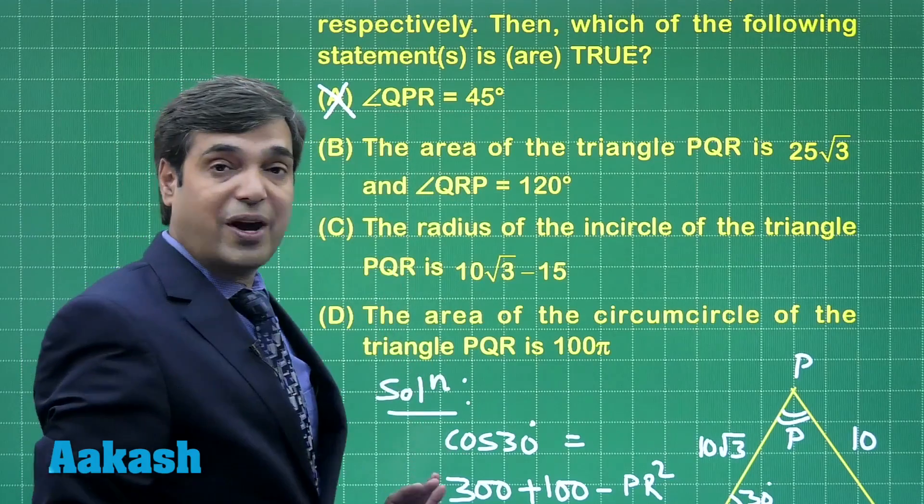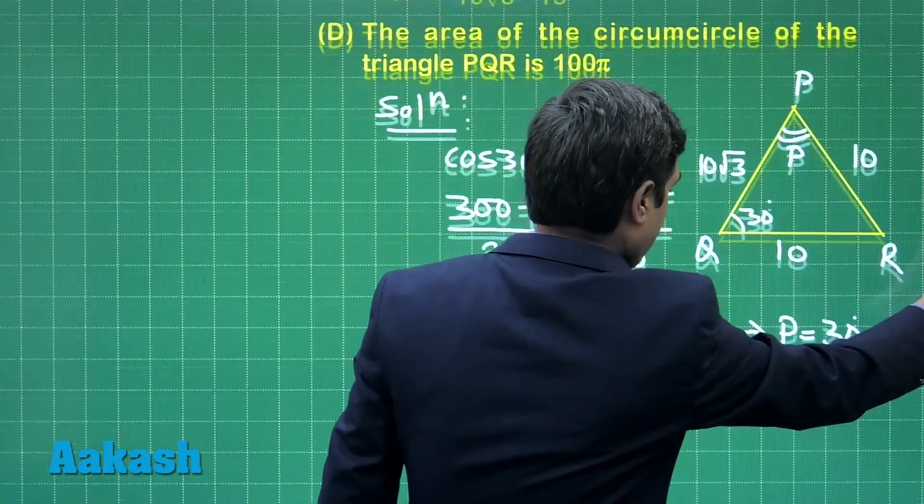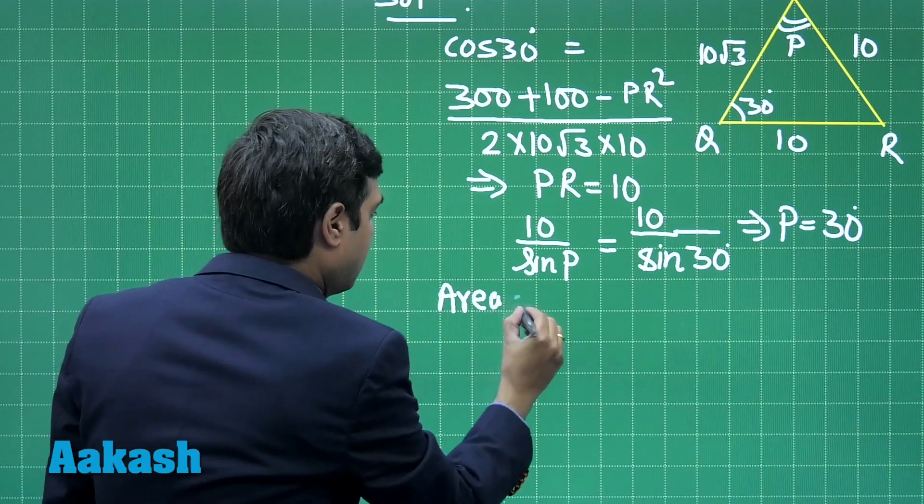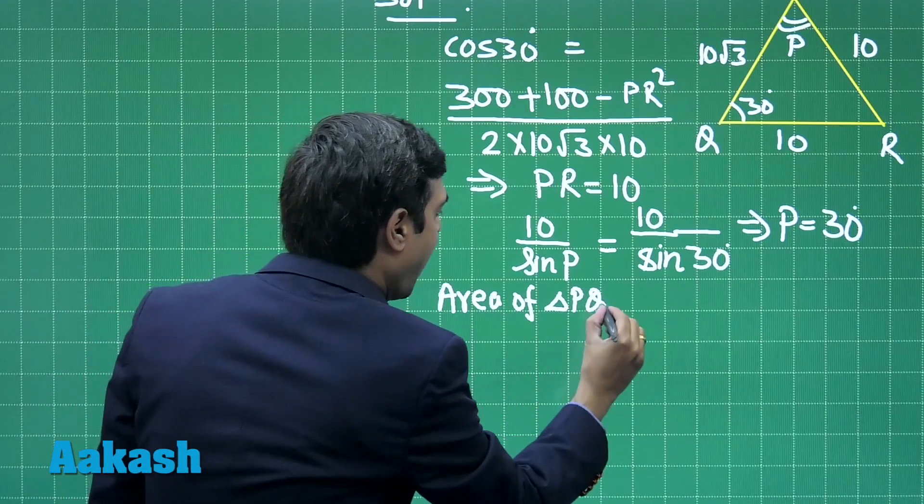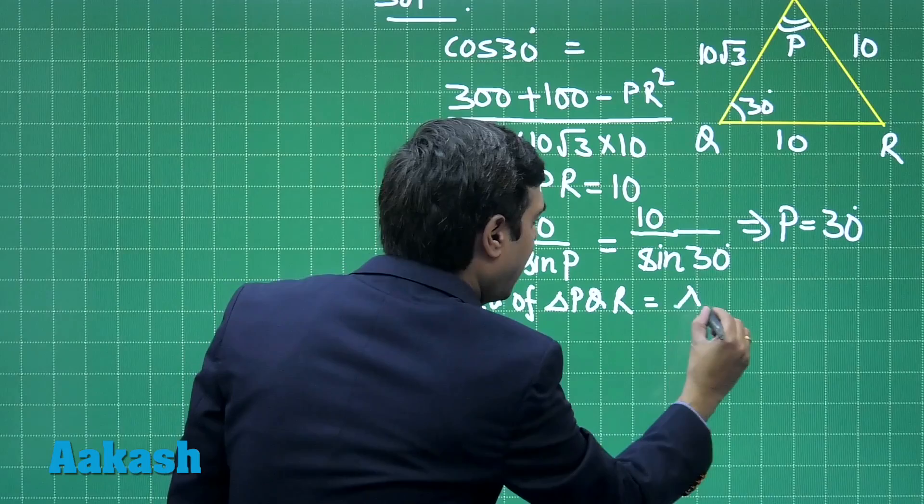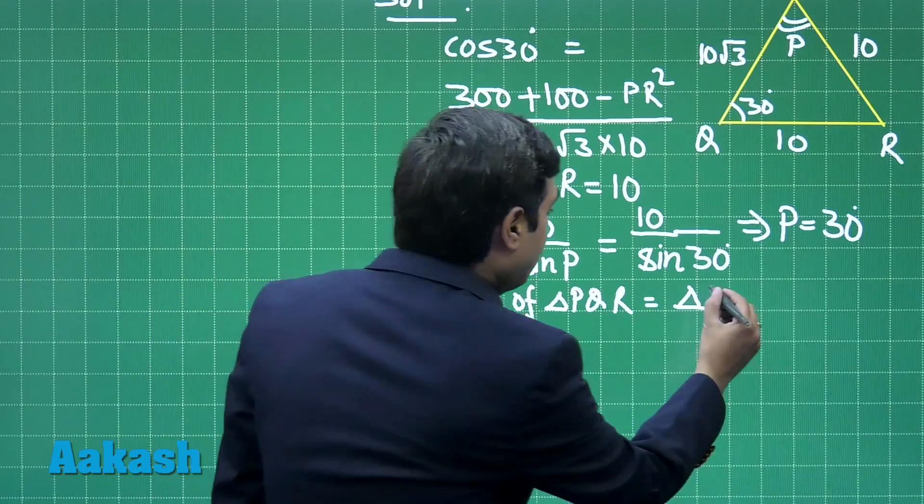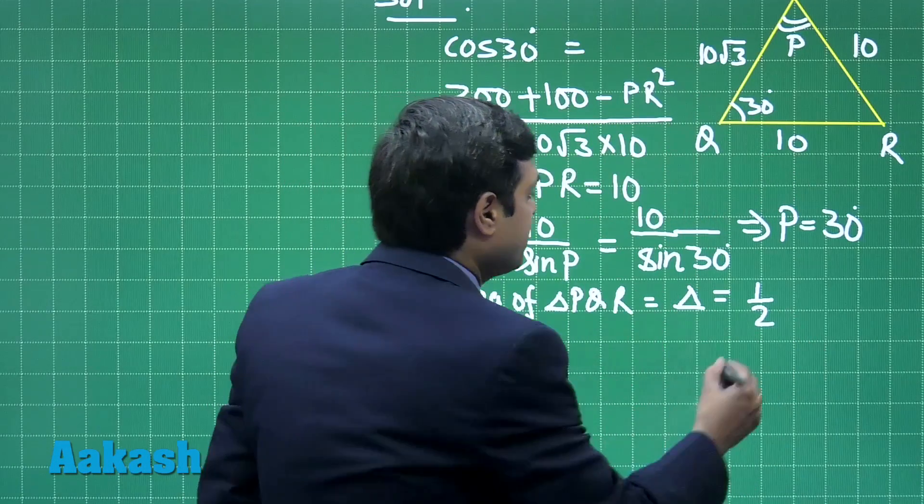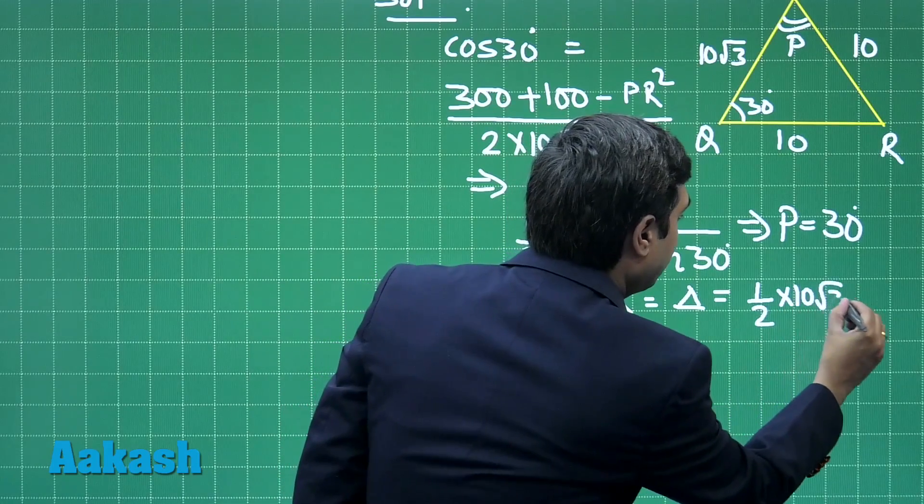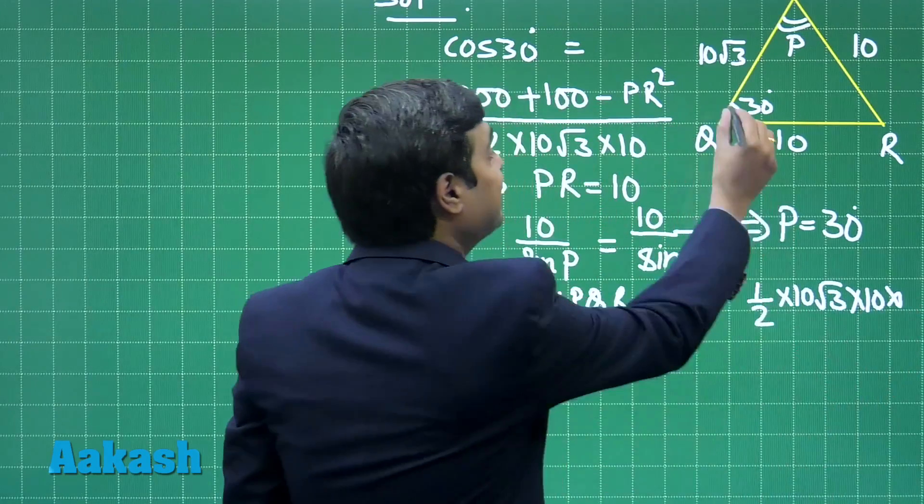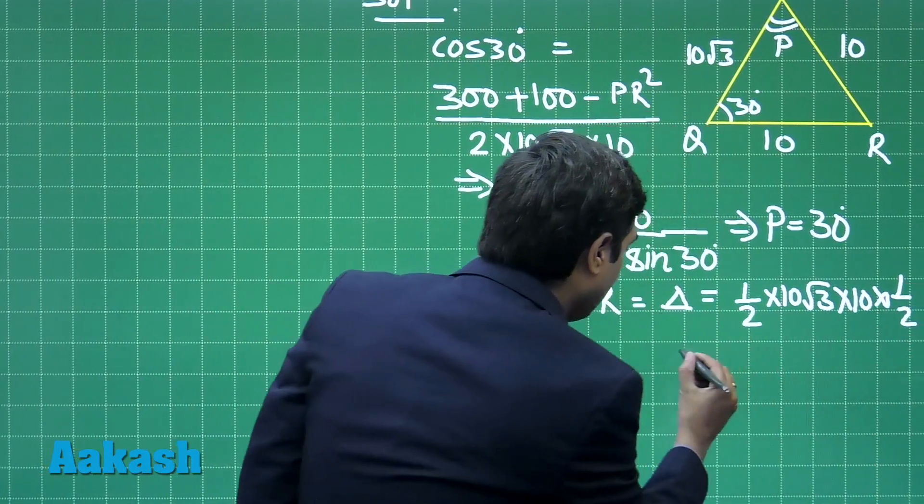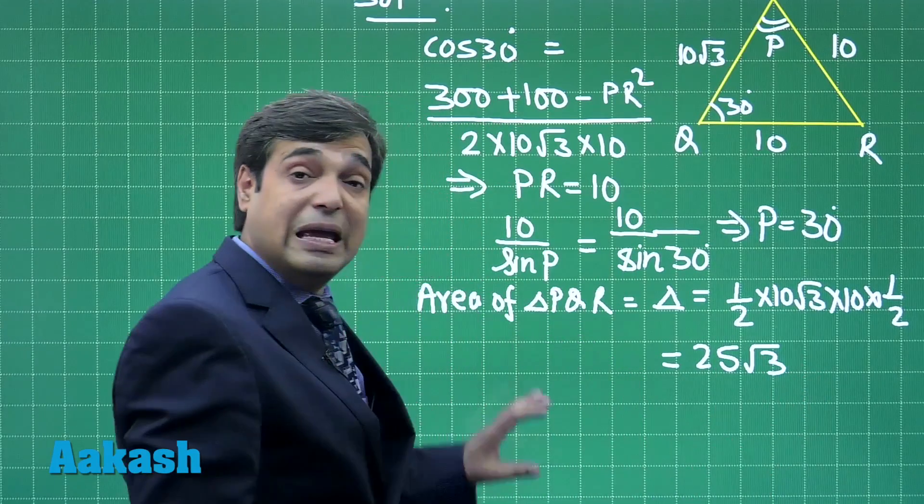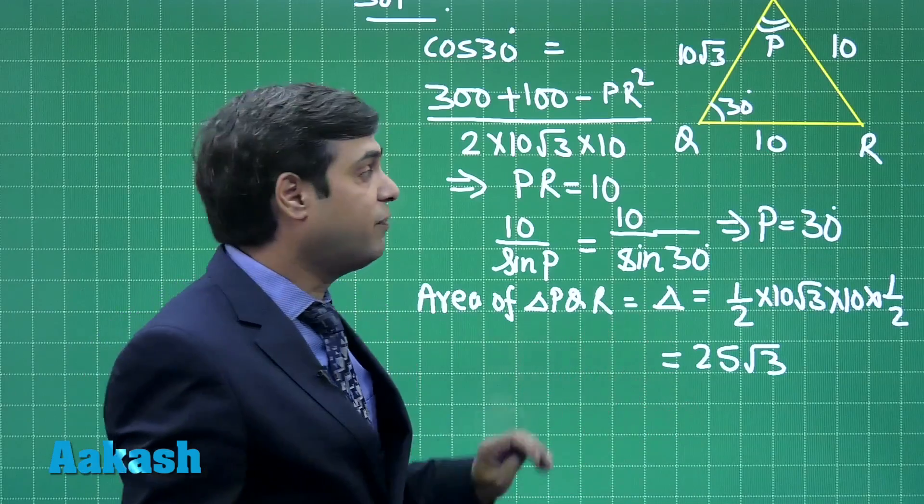Next, the area of the triangle PQR. We can find area of triangle PQR, let us denote it by delta because it will be required further as well. This is equal to half, 1 by 2. Let us consider AB sine C, so it gives us half into 10 root 3 into 10 into sin 30 degrees, that is half. So this is equal to 25 root 3. Area of triangle PQR is 25 root 3.